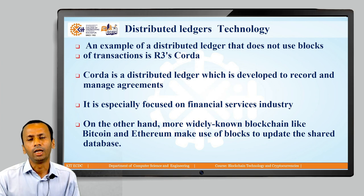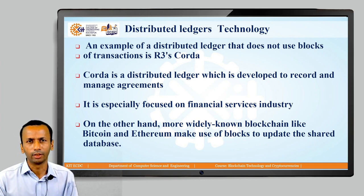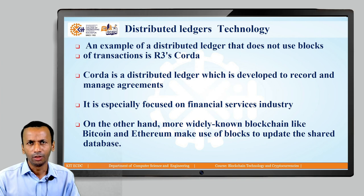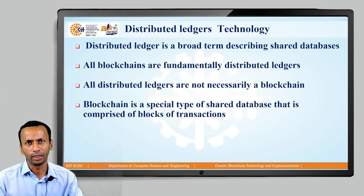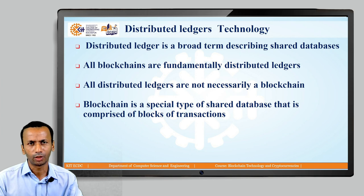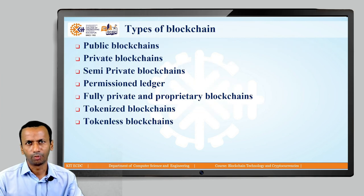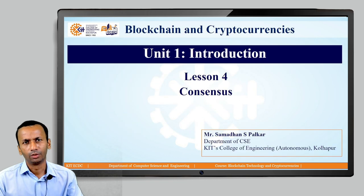Bitcoin and Ethereum make use of blocks to update the shared database, which is different from Corda. The very important takeaway is: all blockchains are fundamentally distributed ledgers, but not all distributed ledgers are necessarily blockchains. We have now covered the types of blockchain and distributed ledger technology, and we'll meet again with a new concept in blockchain.